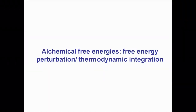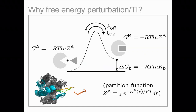But all of this depends on sampling all relevant states spontaneously, which isn't always the case. That's why alchemical free energies are often an interesting choice. Consider the process of ligand binding to a protein: we can look at the bound state, compute its probability relative to the unbound state, and get the binding free energy. From intermediate states we also get an impression of the free energy barrier separating bound from unbound.